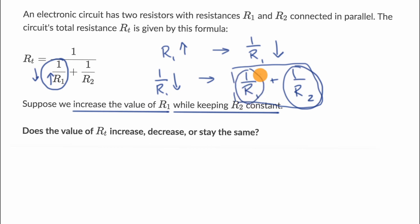So if you're taking the sum of two things, one part's going down, the other part's constant, then that means this whole thing is going to be going down. So the entire denominator of this entire thing is going down.